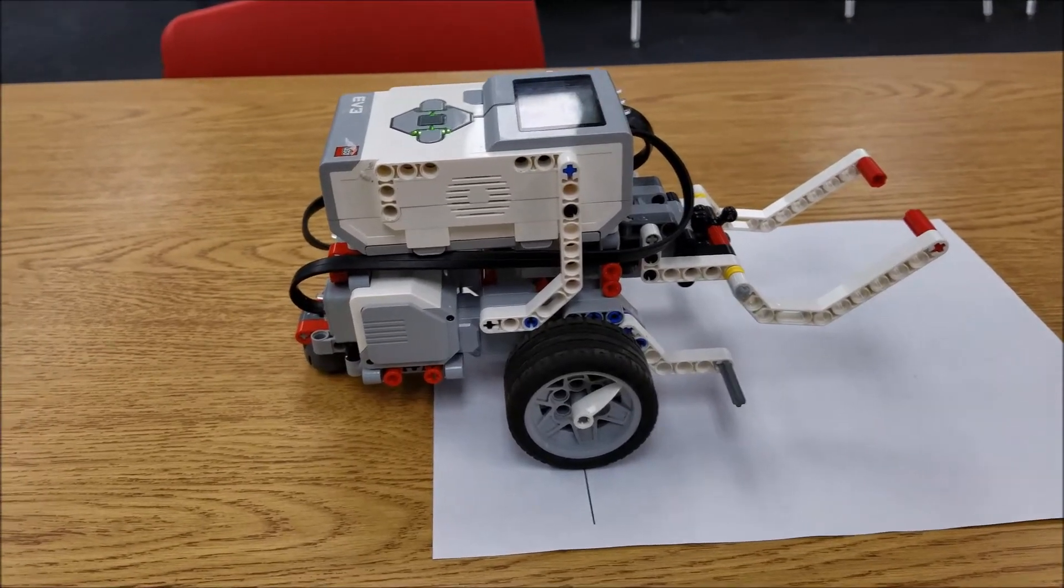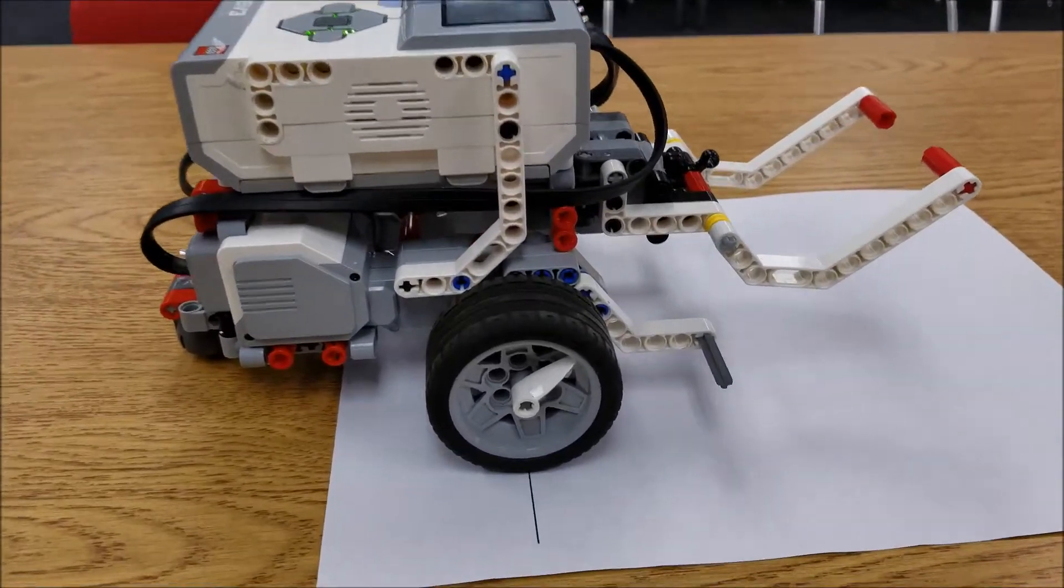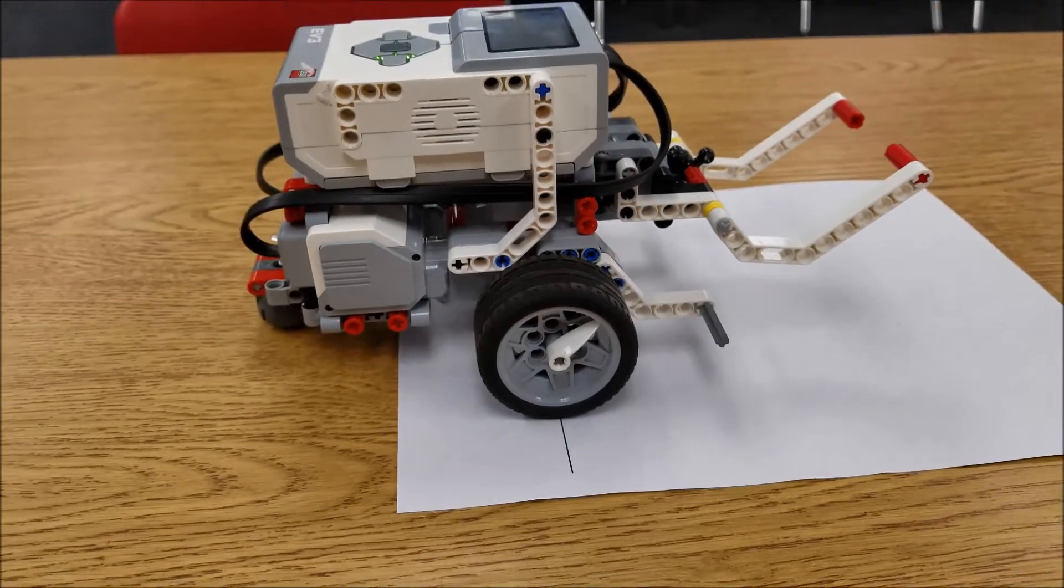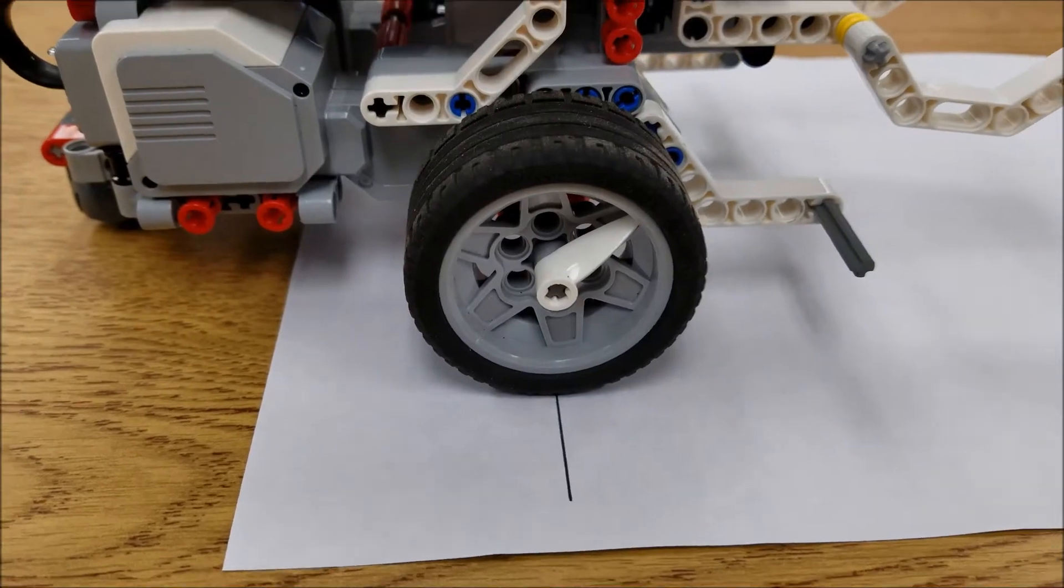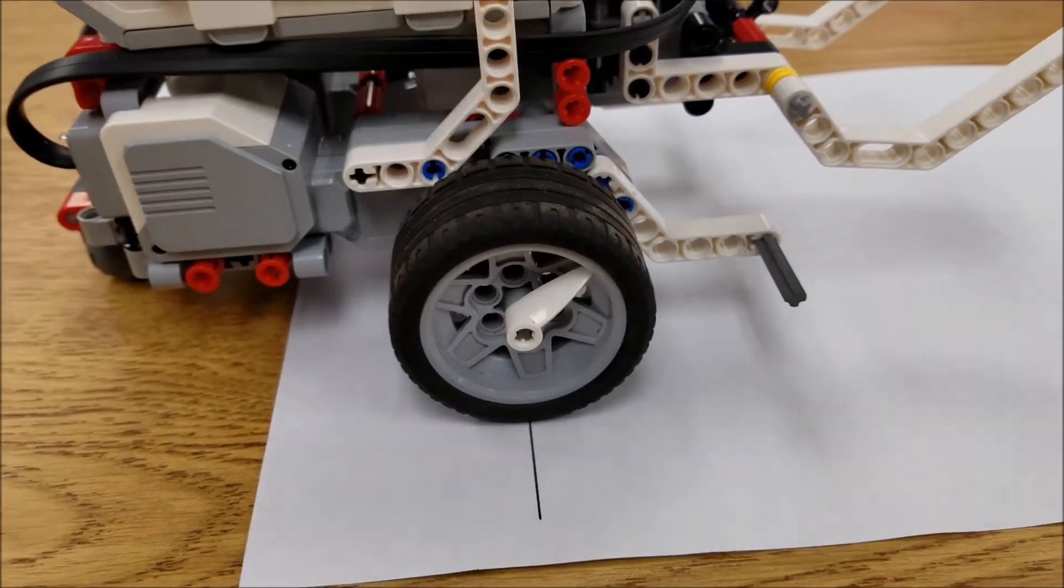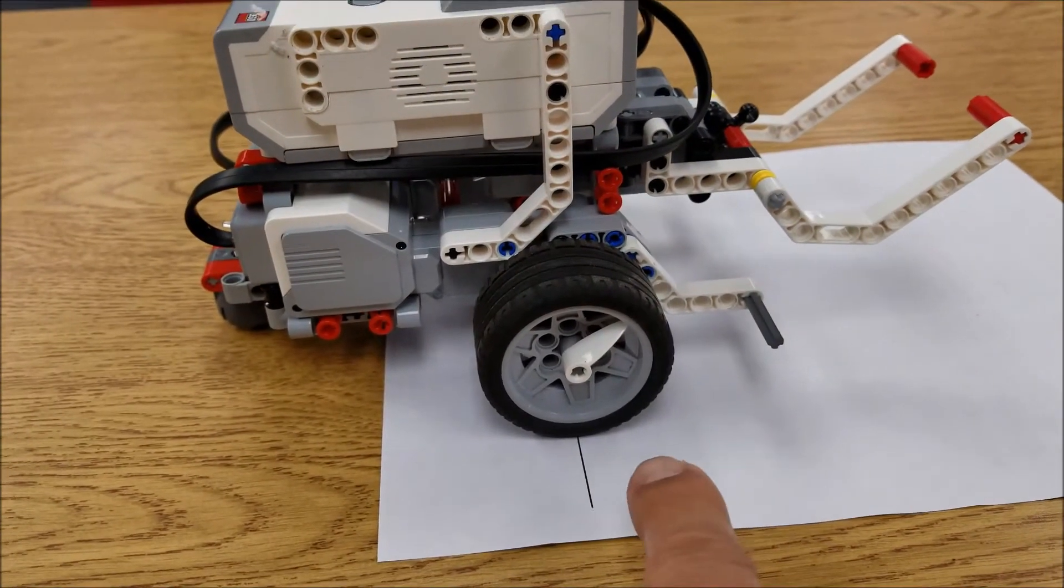So here's what I'm going to have set up and this kind of shows you the circumference of the tire again. So what I did is I made a mark here on this paper and that's basically going to show that I am starting where I'm starting from.